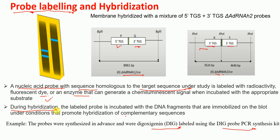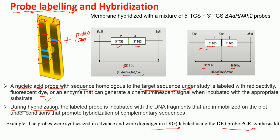After probe labeling, we perform hybridization. We take the membrane and incubate it with our probes. The probes will specifically bind — for Delta adRNAs1, to the DNA fragment corresponding to 8.9 kb; for Delta adRNAs2, to the two fragments of 3.5 and 4.6 kb respectively. They will not bind to other fragments — only specifically to these intended fragments.